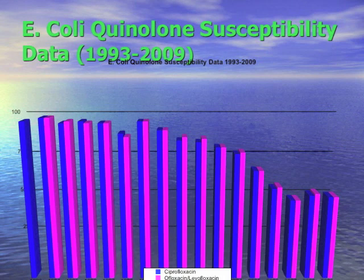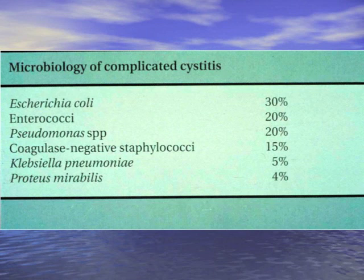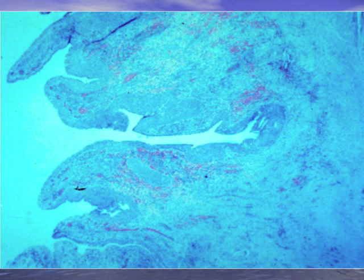At Moffitt, quinolone and E. coli resistance is approaching 50%, mirroring the rest of the world. Klebsiella hasn't been as bad. When you think of cystitis UTIs, consider E. coli, but don't forget enterococcus, pseudomonas, coag-negative staph, Klebsiella, and Proteus.